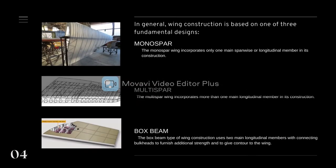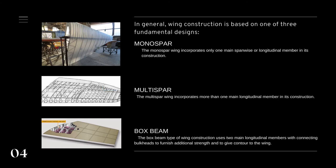In general, wing construction is based on one of three fundamental designs: the mono spar wing, the multi spar wing, and the box beam.